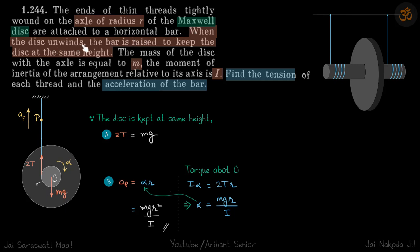When the disc unwinds, the bar is raised to keep the disc at the same height. So this thread is pulled up such that this disc remains at the same height, because when we are pulling the thread it...